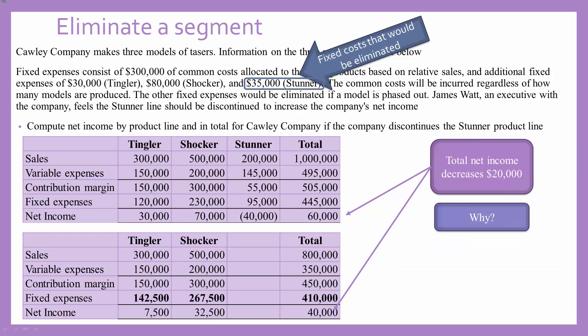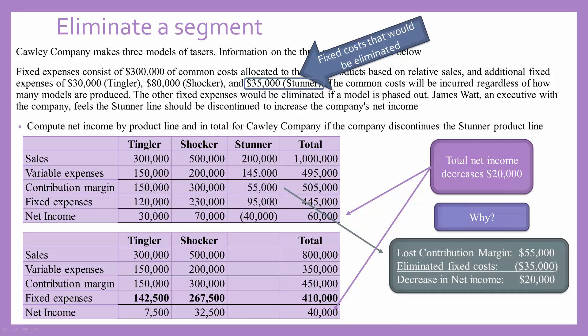The reason for this decrease is because we lost the $55,000 worth of contribution margin that Stunner was contributing to the company as a whole. However, our fixed costs only went down by that $35,000 specifically related to Stunner, so overall it causes a decrease in net income of $20,000 if they choose to eliminate the Stunner line. So even though the Stunner line by itself is not profitable, it is helping the company overall to cover some of their fixed costs, so it would actually be better to keep the Stunner line.